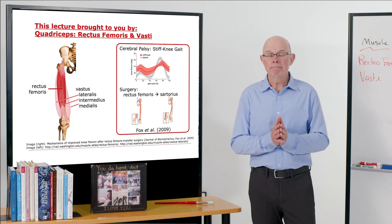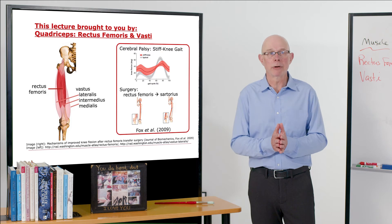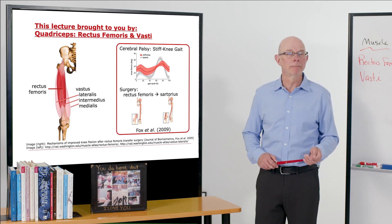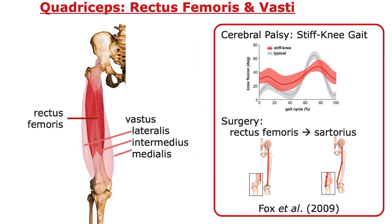Sometimes there's excessive activity in the rectus femoris, and that's thought to cause stiff knee gait in cerebral palsy. What that looks like, I'm showing in the plot here.